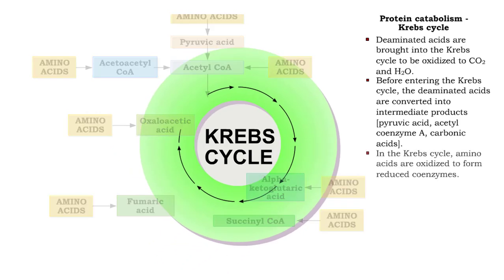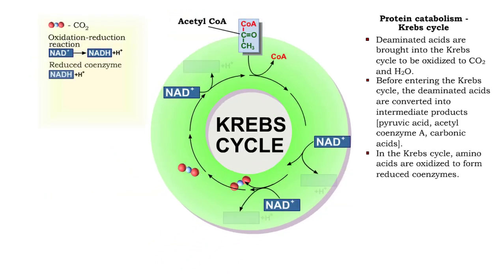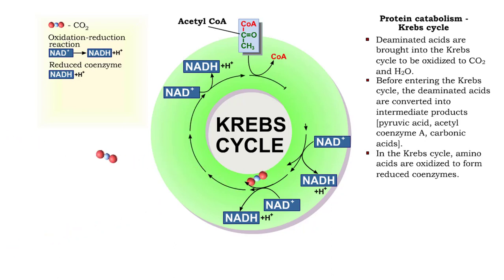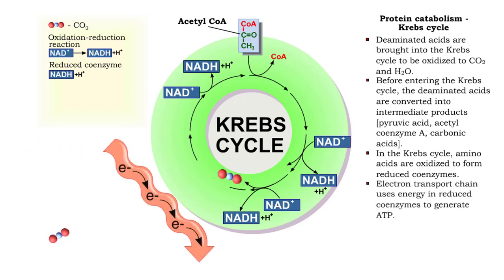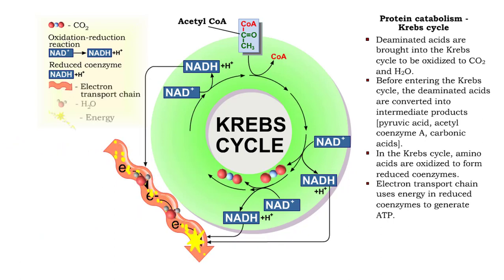Once the amino acids enter the Krebs cycle, they are oxidized to form reduced coenzymes. Later on, the electron transport chain uses the energy in reduced coenzymes to generate ATP.